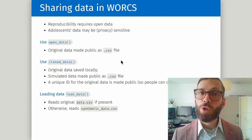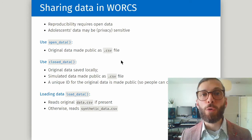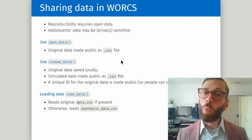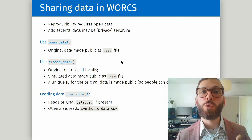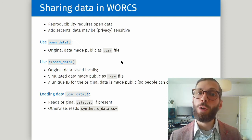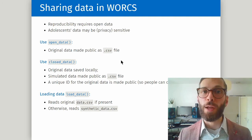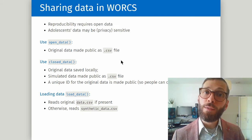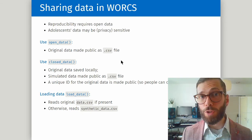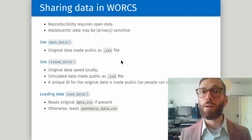I want to spend some time talking about sharing data, because if you really want to have a reproducible paper you should make your data open. However, as adolescent researchers we know that our data is often privacy sensitive. WORKS gives you options to go around this. If you can share your data, you use the function open_data to make the original data publicly available as a spreadsheet. If you cannot share them, you use closed_data. The original data will be stored to your computer and a synthetic dataset will be created with similar characteristics to the original and made publicly available. These are fake data and therefore not privacy sensitive.